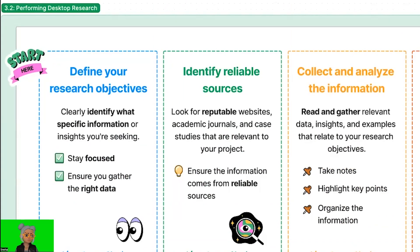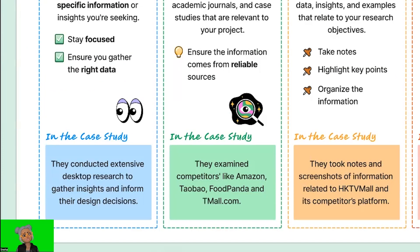Step 2: Identify reliable sources. Look for reputable websites, academic journals, industry publications, and case studies that are relevant to your project. Ensure the information comes from reliable and trustworthy sources. In the case study, they analyzed industry reports and examined competitors like Amazon, Taobao, Foodpanda, and Tmall.com.